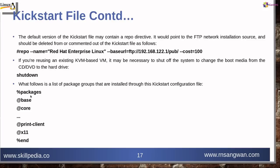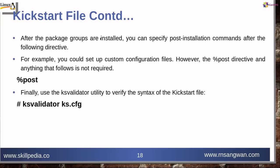Under %packages you specify all packages you want to install on your target system using kickstart. After package groups are installed, you can specify post-installation commands after the %post directive — for example, setting up a custom configuration file. Finally, we verify our kickstart file using the ks-validate command: ks-validate ks.cfg. If there is no output, the file is valid. The example kickstart file I used is available on the blog at skillpedia.co.